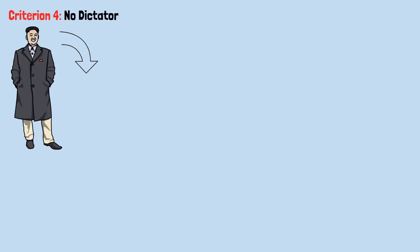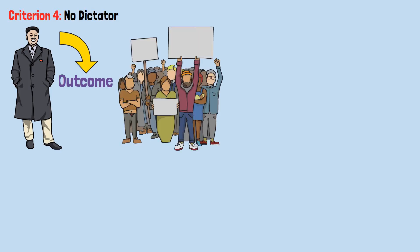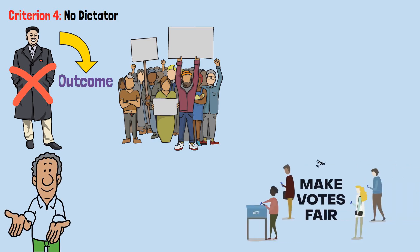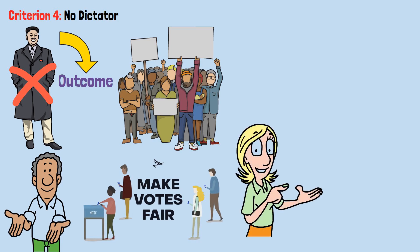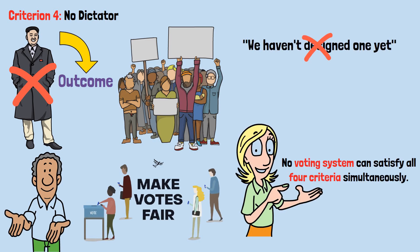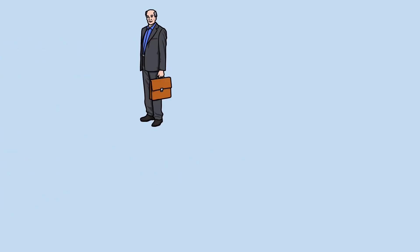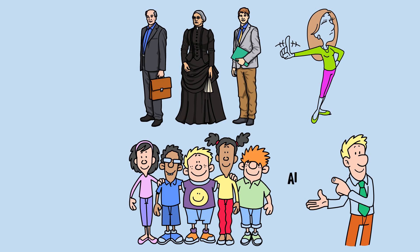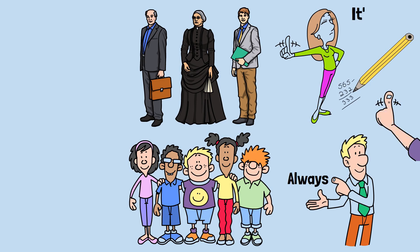Criterion 4: No dictator. There shouldn't be one person whose preference always determines the outcome regardless of what everyone else wants. One person dictating outcomes isn't democracy. These four criteria seem like the bare minimum for a fair voting system. Here's what Arrow proved: no voting system can satisfy all four criteria simultaneously. It's mathematically impossible. If you have more than two candidates and more than two voters, you cannot create a system that meets all four fairness criteria — you have to violate at least one, always. This is a mathematical theorem proved rigorously. It's not opinion, it's not politics, it's logic.